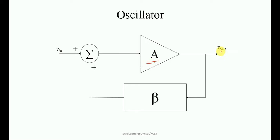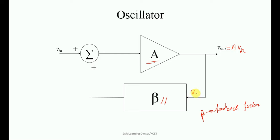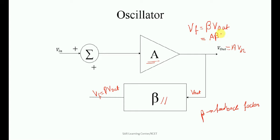The output of the amplifier is V-out, which equals A into V-in. The same signal is fed back through the feedback circuit, which determines the resonant frequency of the circuit. Beta is the feedback factor. The input of the feedback unit is V-out, and the output of the feedback unit is called V-F, where V-F equals beta into V-out. We can also write V-F equal to V-out, and since V-out equals A into V-in, that gives A·beta into V-in.